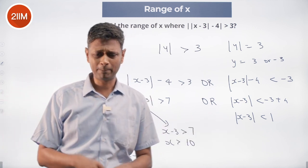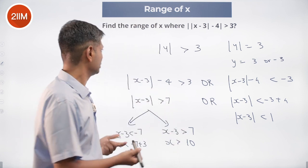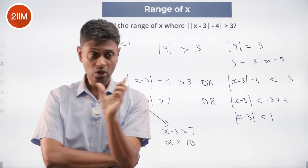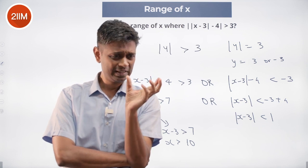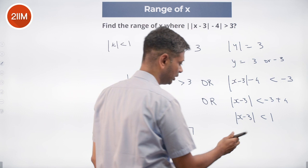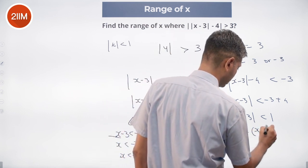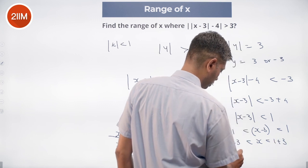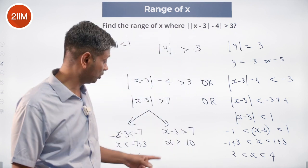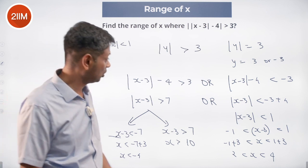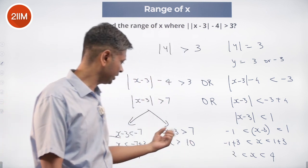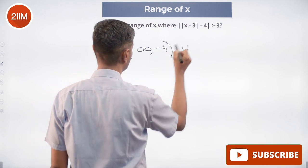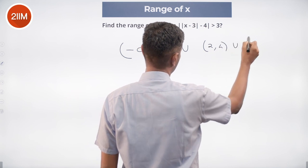Now for the other side: modulus of (x minus 3) is less than 1. When the magnitude is less than 1, the expression sits between minus 1 and plus 1, so minus 1 is less than x minus 3 is less than 1, giving us 2 less than x less than 4. Combining everything: x is between 2 and 4, or x is less than minus 4, or x is greater than 10. The full solution is minus infinity to minus 4, union 2 to 4, union 10 to infinity.